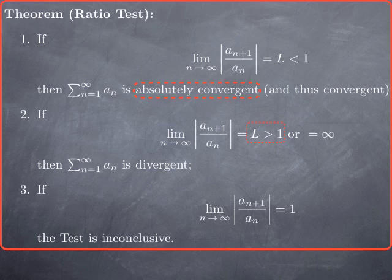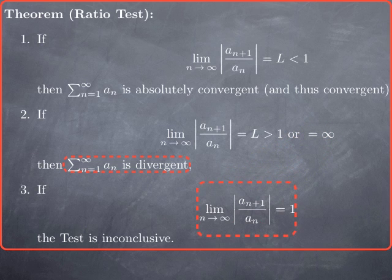If the limit is greater than 1, or goes to infinity, then the series is divergent. Again, if it were a geometric series, the ratio would be constant, and if that constant is greater than 1, we have a divergent series. We should point out that if the limit of this ratio is exactly 1, then we cannot conclude anything.